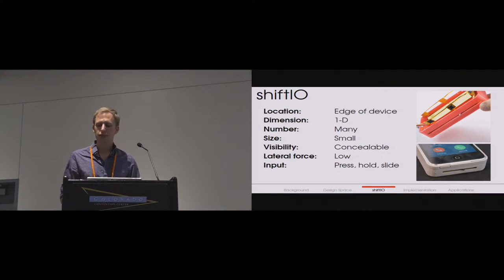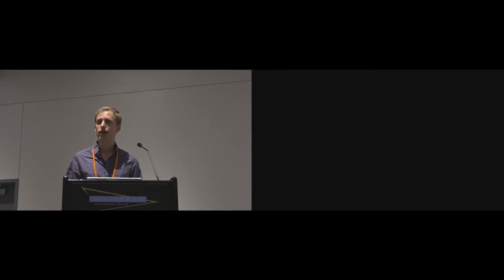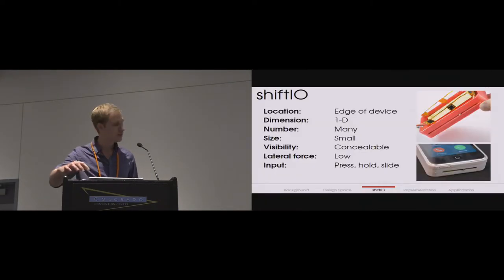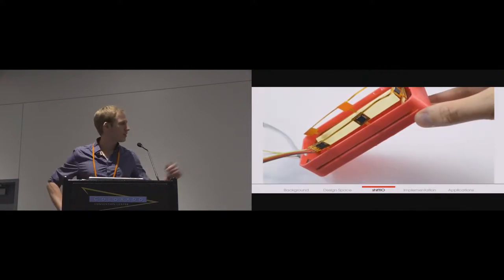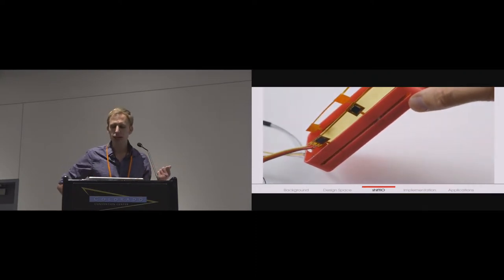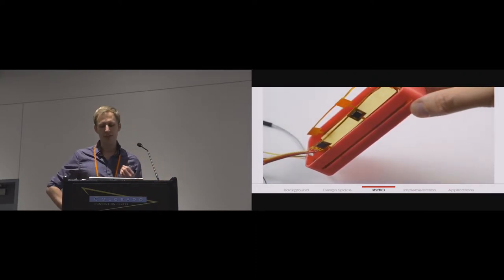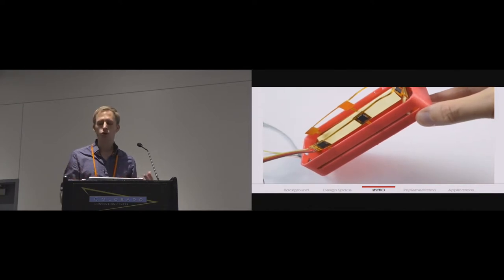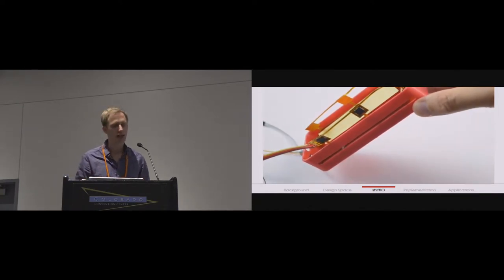So for our realization of a reconfigurable tactile element interface, we created two prototype devices that we call ShiftIO. ShiftIO augments an existing mobile device with an RTE interface. We manipulate a number of elements which can travel around the exterior of a device and disappear within its interior. Here's what that hardware looks like. Note how we can store RTEs hidden within the device when unused and then draw them out for use in a given configuration, allowing us to add or remove controls as needed for a particular application.